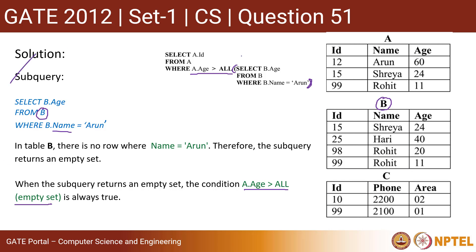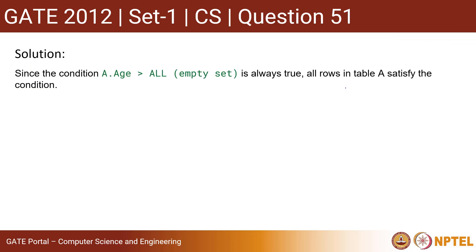We are making the query from table A and our condition is always true. So it's basically fetch all the IDs. The output will be 12, 15, and 99. So basically three rows will be returned, three tuples will be returned.